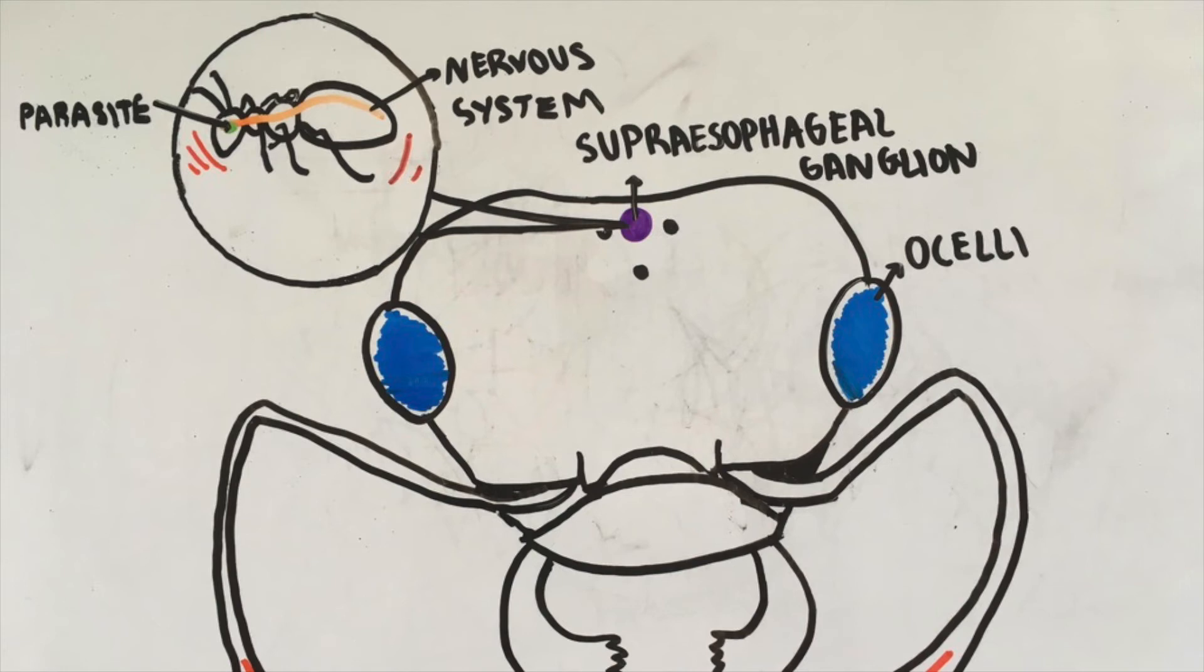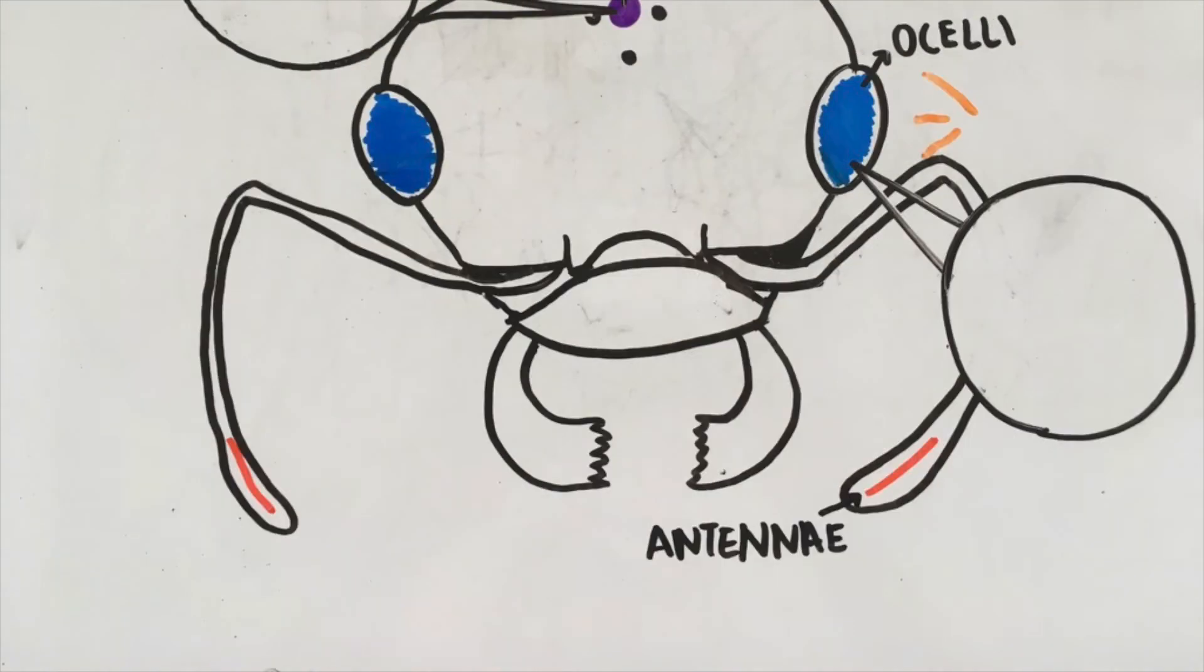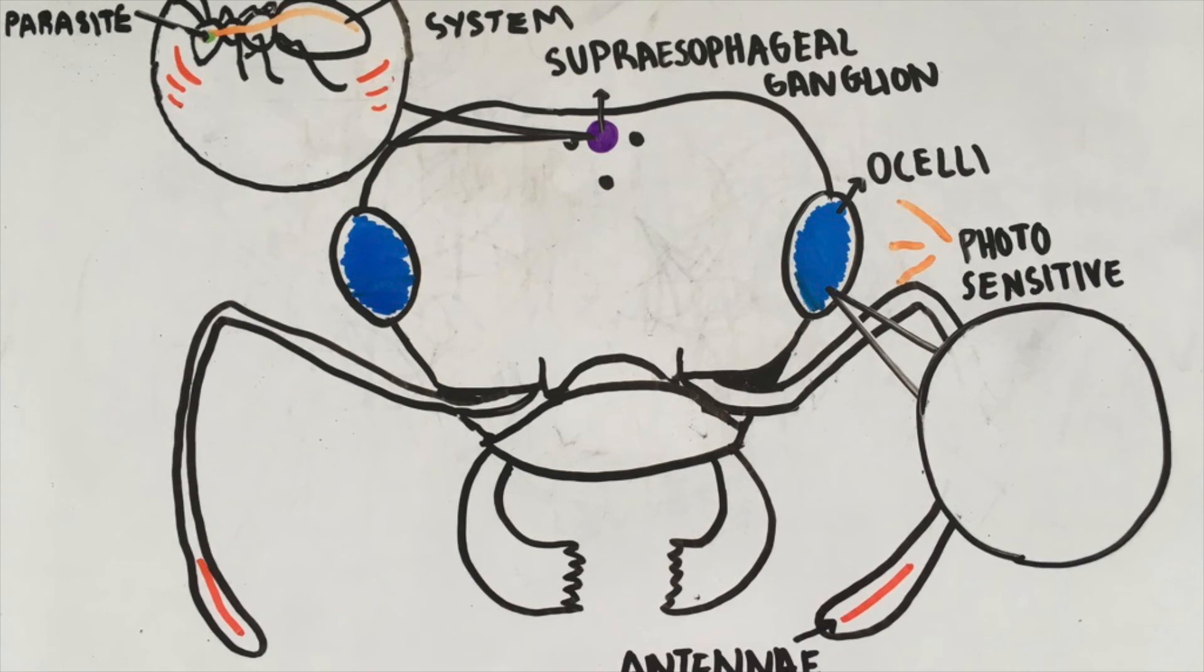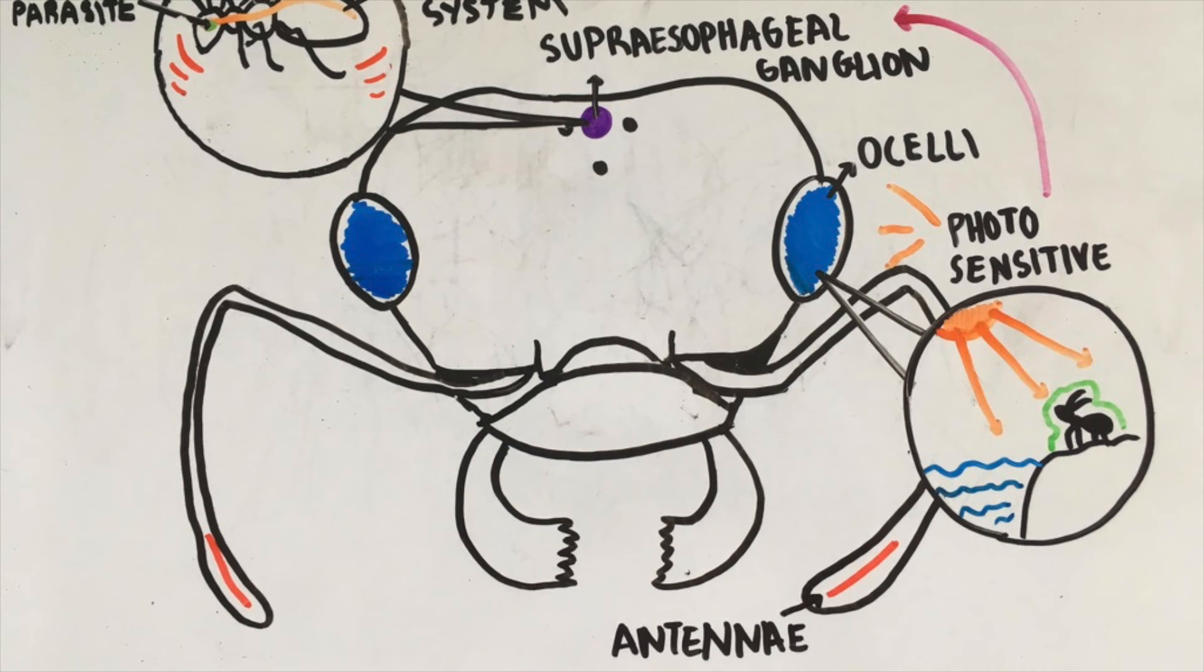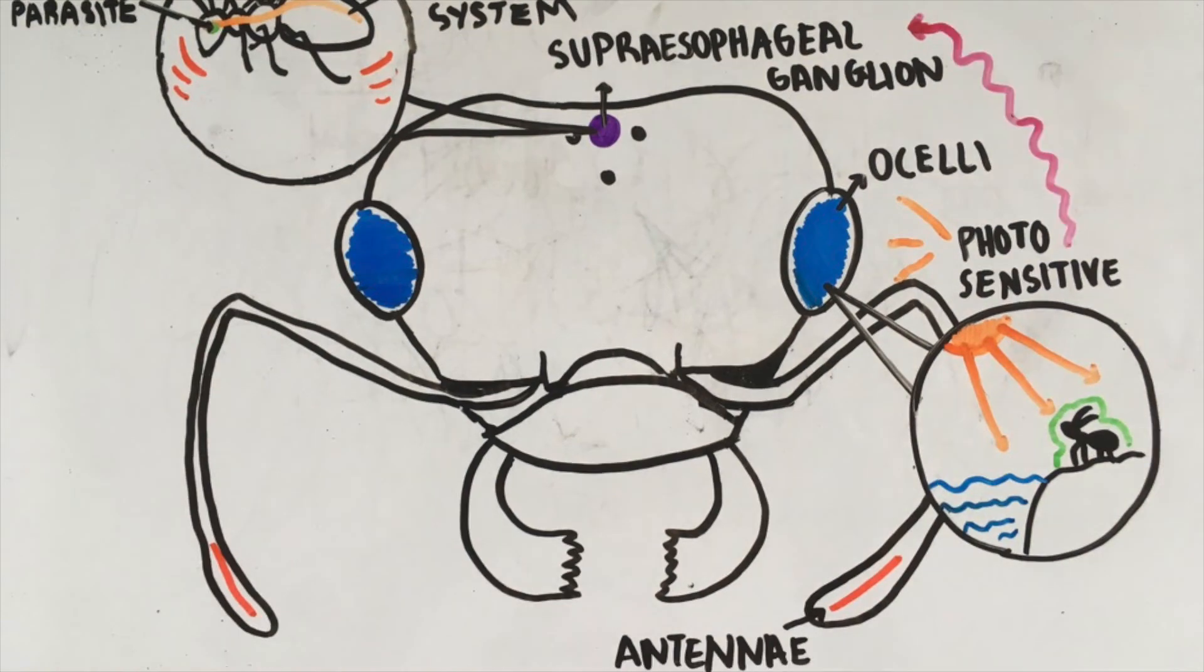For example, the ocelli and antennae aid the ant's navigation, which is probably why it wanders away at night. Also, carpenter worker ants are normally strongly photophobic, which means light hurts their eyes, but scientists observe that the affected ants seem to just stay on river rocks exposed to the bright rays of sun for many hours, suggesting that the light regulation center of the subesophageal ganglion is impaired.